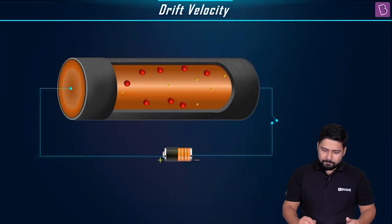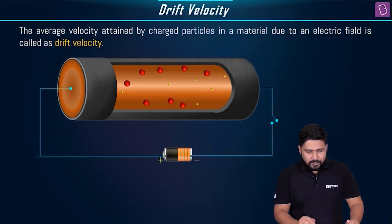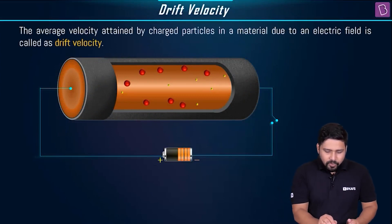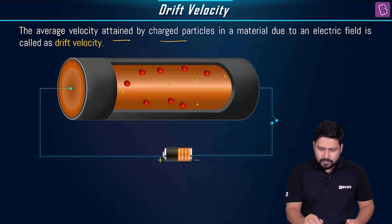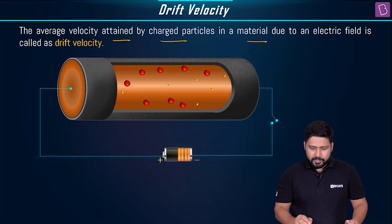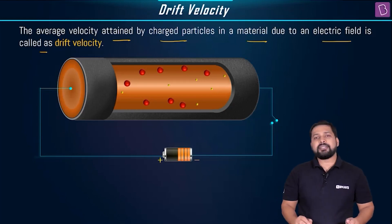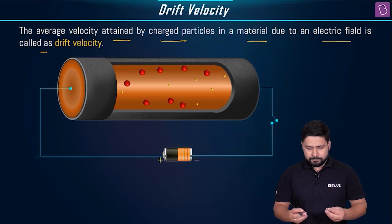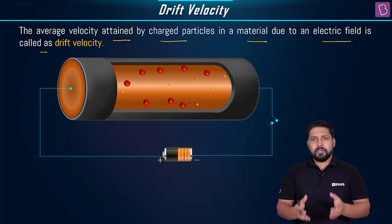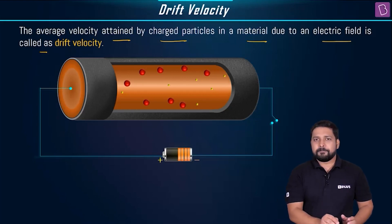Let us understand the drift velocity. What is drift velocity? The average velocity attained by the charged particle in a material due to the electric field is called as the drift velocity — the average velocity that they attain because of the electric field.